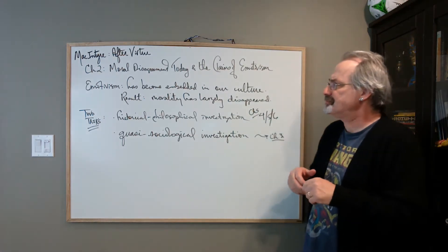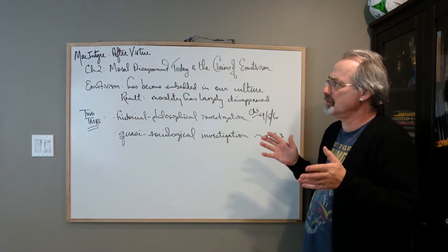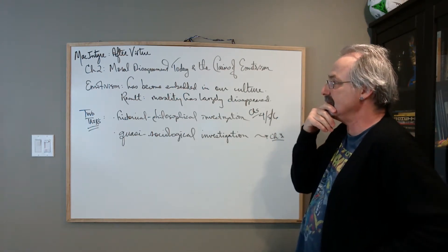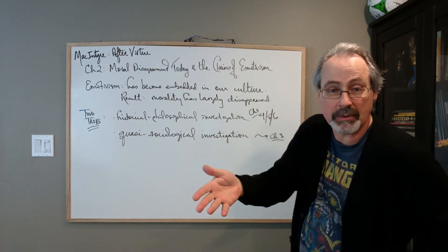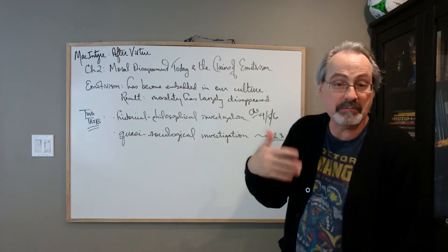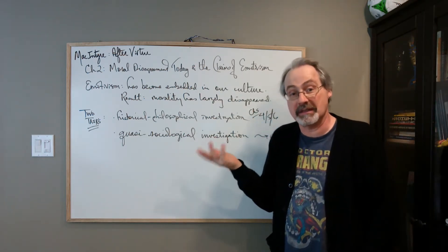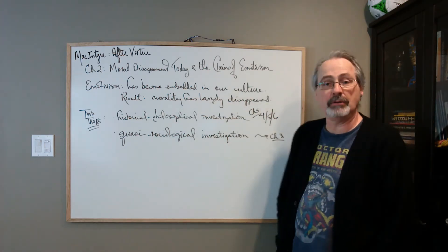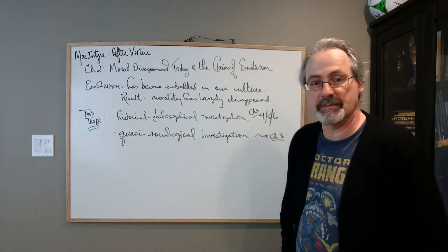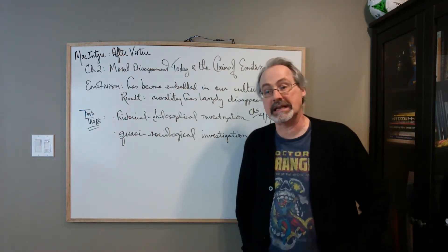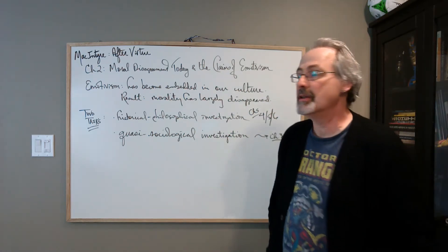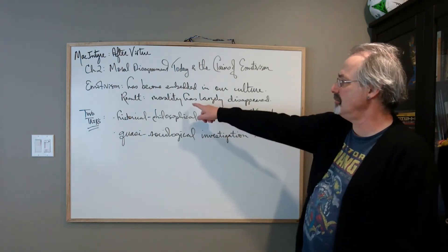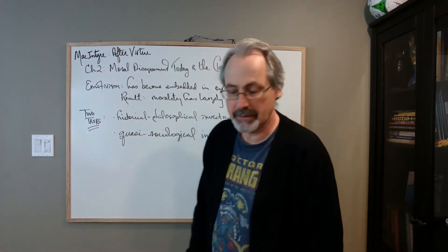What we're trying to tidy up here is the end of the chapter. MacIntyre wants to say something like: emotivism has its problems, people have misdiagnosed the history and thought it was a theoretical problem when it's actually a historical problem. Emotivism has become embedded in our culture — its rise is largely a response to certain theories in England, around 1903 to 1939.